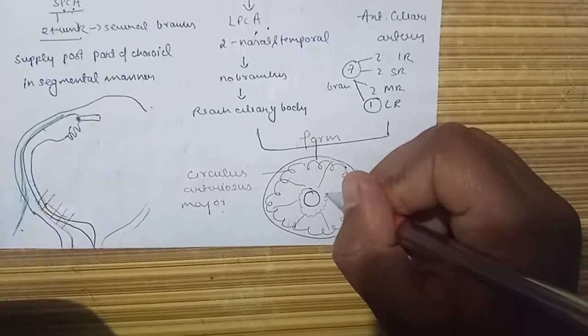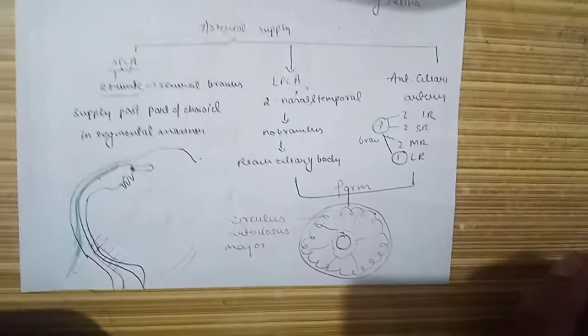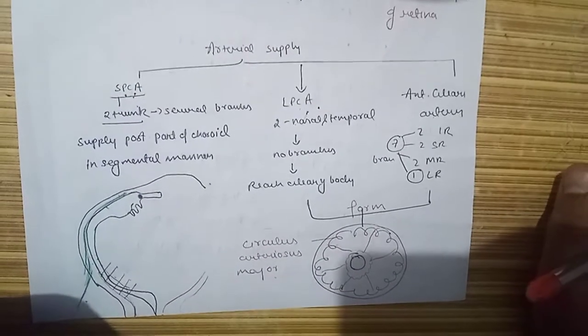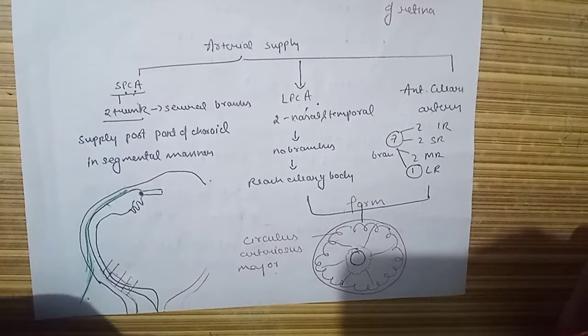This supplies the whole of the iris. So this is the blood supply of the uveal tract. Thank you.